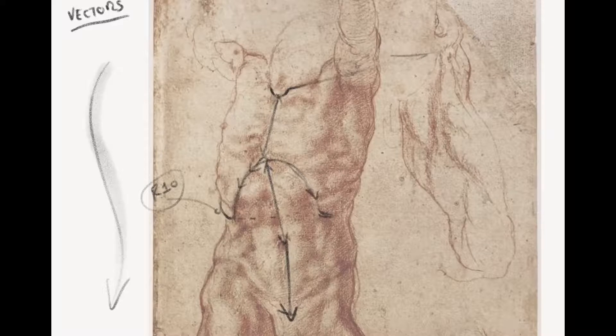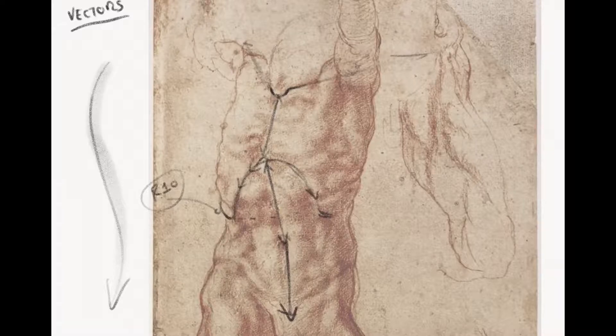The collarbone is fixed at the sternum end but very mobile at the shoulder end — one of the reasons it's a painful bone to break. Vectors are important here: you can see the collarbone shooting off one way, going behind what's happening here and attaching there, similarly shooting off in the other direction, giving a sense of that almost painful-looking contorted pose that Michelangelo has put the figure in.